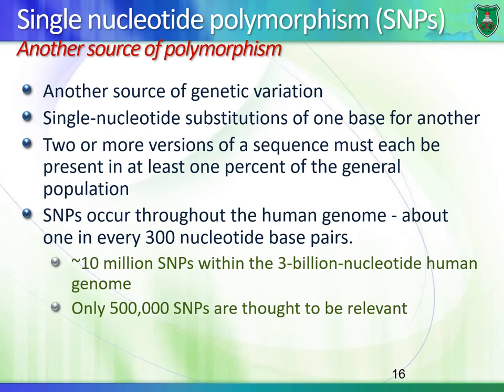The idea is that at a single location on a chromosome, you have the same exact sequence except for a difference in one nucleotide — this is single nucleotide polymorphism. When is a change considered a polymorphism versus a mutation? If a genetic variation, a SNP, exists in more than 1% of the general population, we call it a polymorphism. If it exists in less than 1% of the population, then we consider it a mutation.